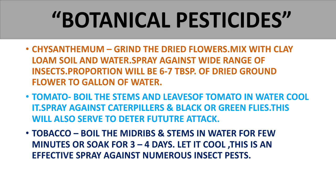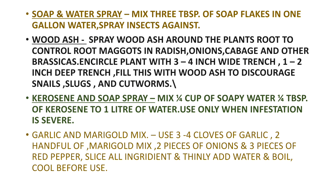Third is tobacco. Boil the midribs and stems of tobacco in water for a few minutes, then leave them in the water for three to four days. Let it cool and apply it whenever infestation is severe. Tobacco as a botanical pesticide helps protect your crop from many types of infestation.